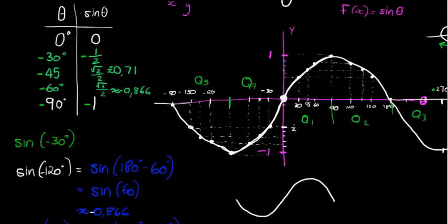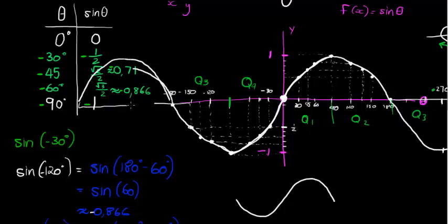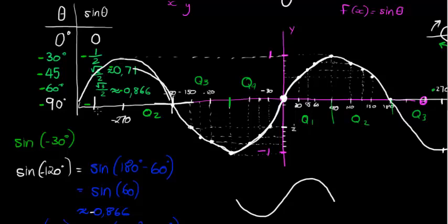Traveling in the negative direction, we first encounter Q4 (negative angles from 0° to −90°) where sine is negative, then Q3 (from −90° to −180°) where sine is still negative. Continuing further, we reach the maximum of 1 again at −270°. Q2 runs from −180° to −270°, where outputs are positive, and Q1 runs from −270° to −360°.